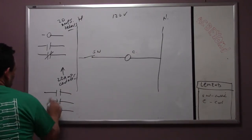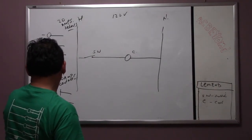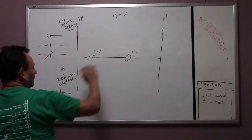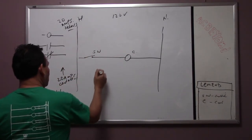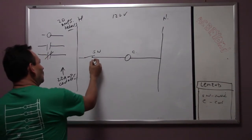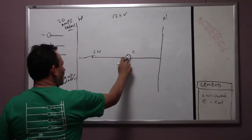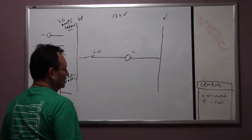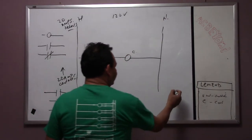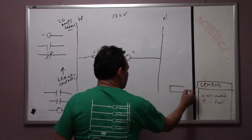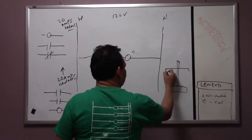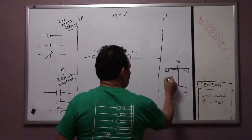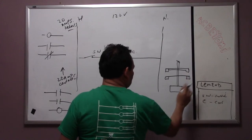Most of the contacts on the wiring diagram are going to look like this, and the coil is usually normally open. Let's say this is a contactor. What happens is when the switch closes, the contactor coil energizes. Let me draw this — there's a coil, an armature, and a set of contacts.